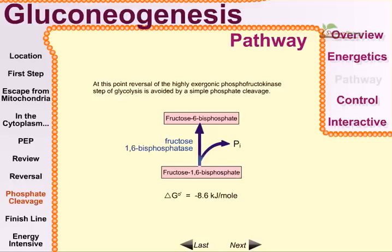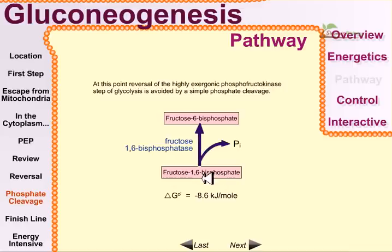This is the second energy barrier. The ΔG for the forward phosphofructokinase reaction is highly negative, so we need energy to go against it. This is accomplished by a simple phosphate cleavage using fructose-1,6-bisphosphatase. Phosphatase enzymes cleave phosphate groups from substrates. By cleaving one phosphate group from fructose-1,6-bisphosphate, the energy released drives the reaction toward fructose-6-phosphate.